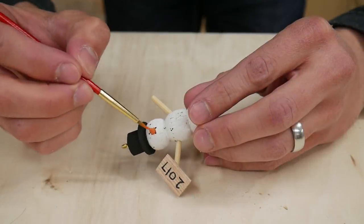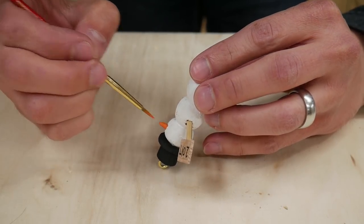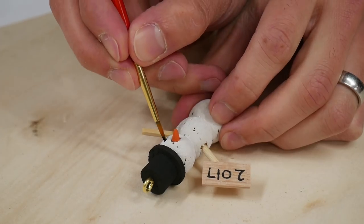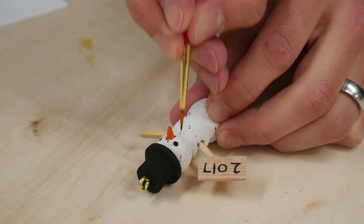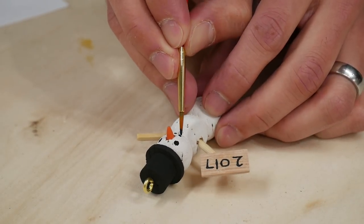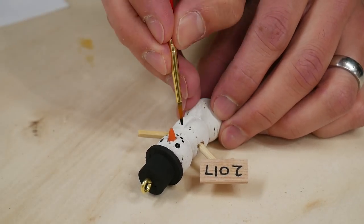When that was dry, I thinned some orange paint and carefully painted the nose. Then I used some unthinned black paint to paint some eyes, a mouth, and some buttons.